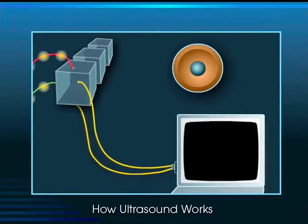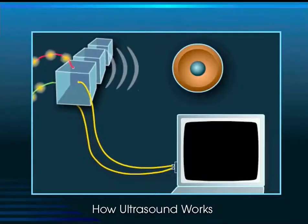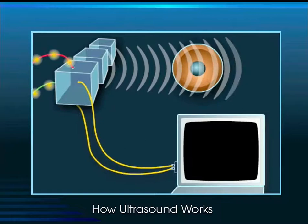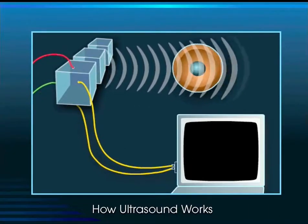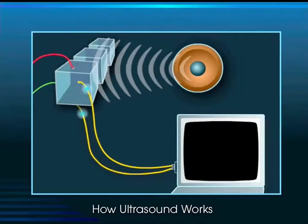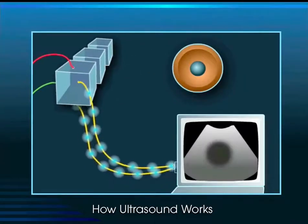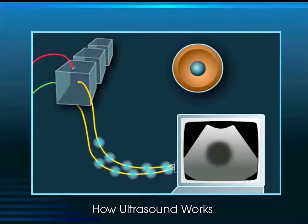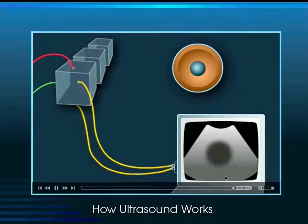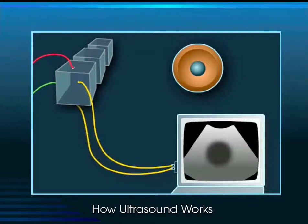Ultrasound works via the piezoelectric effect: when electricity is applied to the transducer, the crystals shake and sound is emitted at the ultrasound frequency. Those sound waves travel into the body, reflect back to the crystals, and the crystals shake again, transducing acoustical energy back into electrical energy. The machine plots these dots on screen — the longer it takes sound to return, the further down the field the dot is plotted. The denser the tissue, the more echo-bright the dot; the less dense (such as water, urine, or bile), the darker the dot.